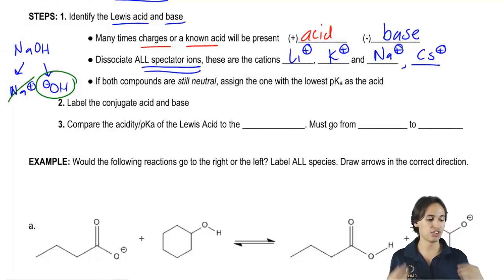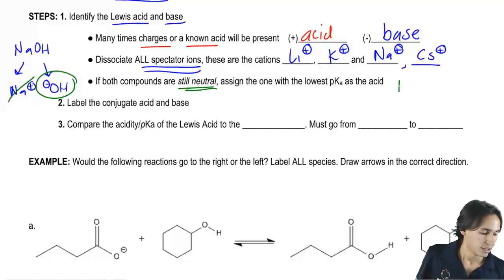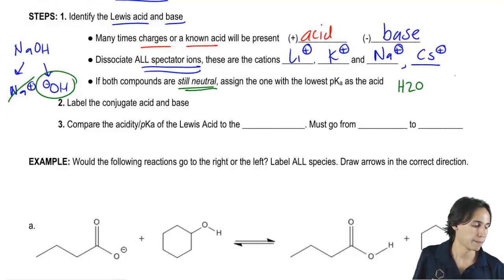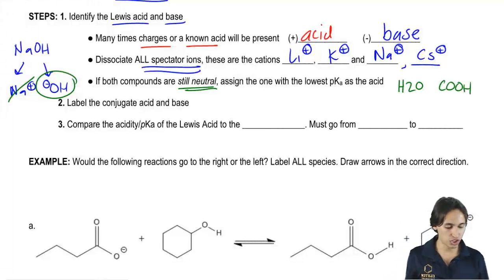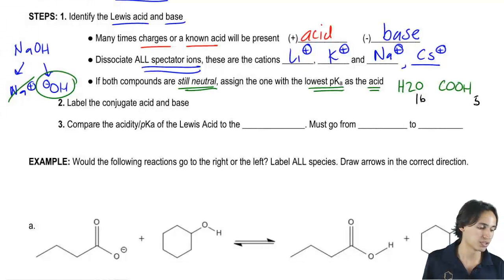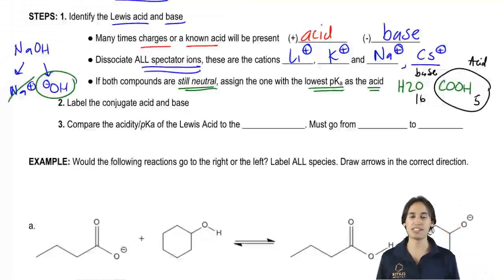But now let's say that you do both of those steps and your compounds are both still neutral. So let's say there's nothing to dissociate. There's no charges. You have no clue what to do. So let's say that you had H2O and you were comparing it to carboxylic acid and you didn't remember that carboxylic acid was an acid. Well, then you could just go ahead and look at pKa's. That's basically the next rule. If they're still neutral, assign the lowest pKa as the acid. So then I would say the pKa of my water is 16. The pKa of my carboxylic acid is 5. So that means that my carboxylic acid is going to be the acid and that means that my water is going to be the base. So basically if you are still neutral at the end, just go with the lowest pKa.